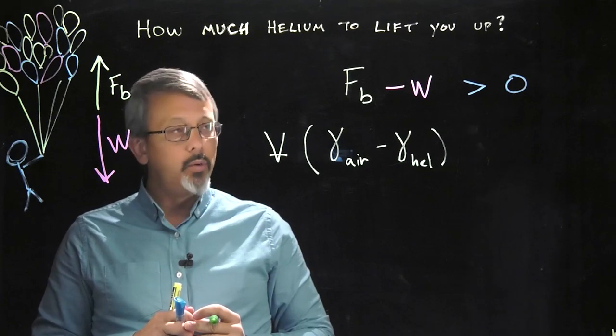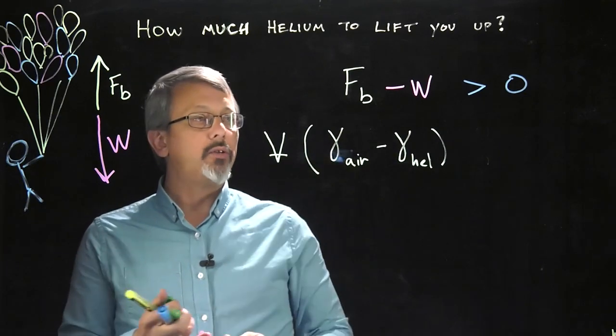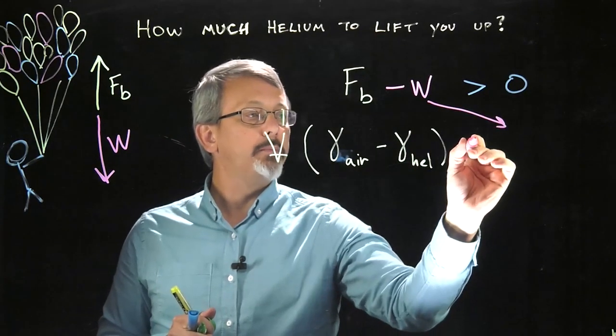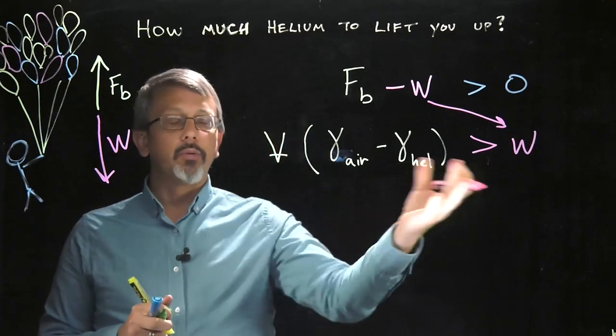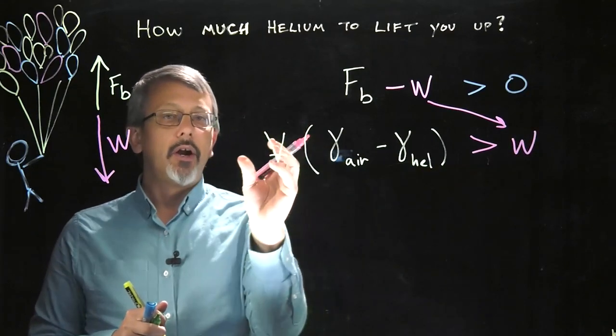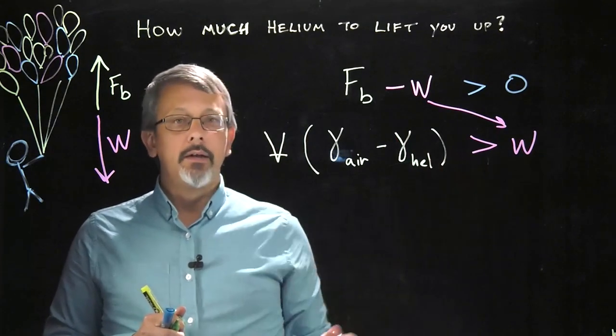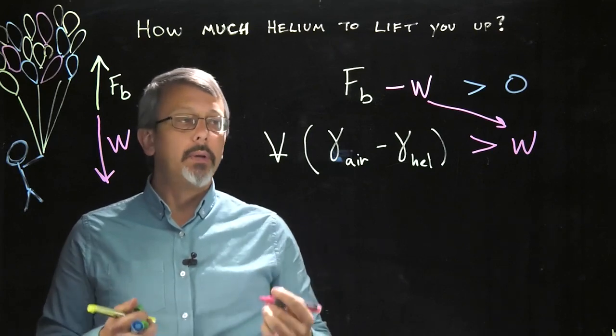Then we're going to take that value, and we're going to compare it to our weight. Notice if I move that weight value to the other side of the equation by adding it to both sides, it becomes positive. So basically, this is the relationship we want to satisfy, that our volume, our specific weights, need to be greater than the weight we're actually trying to lift. So the question, how much, is a question of how much volume.